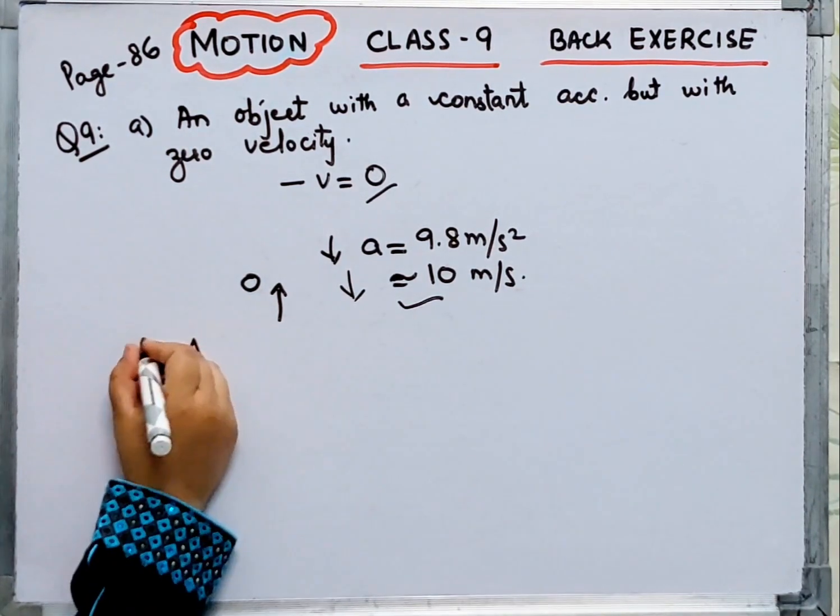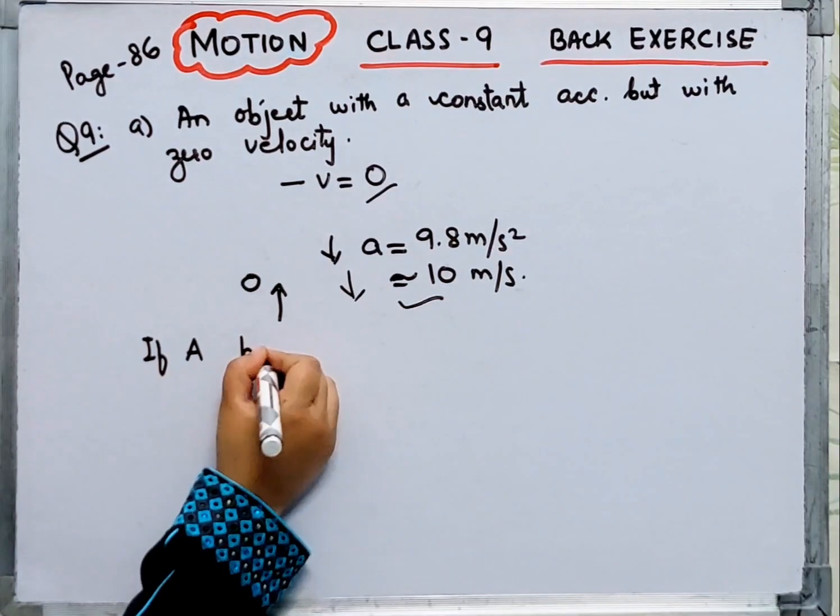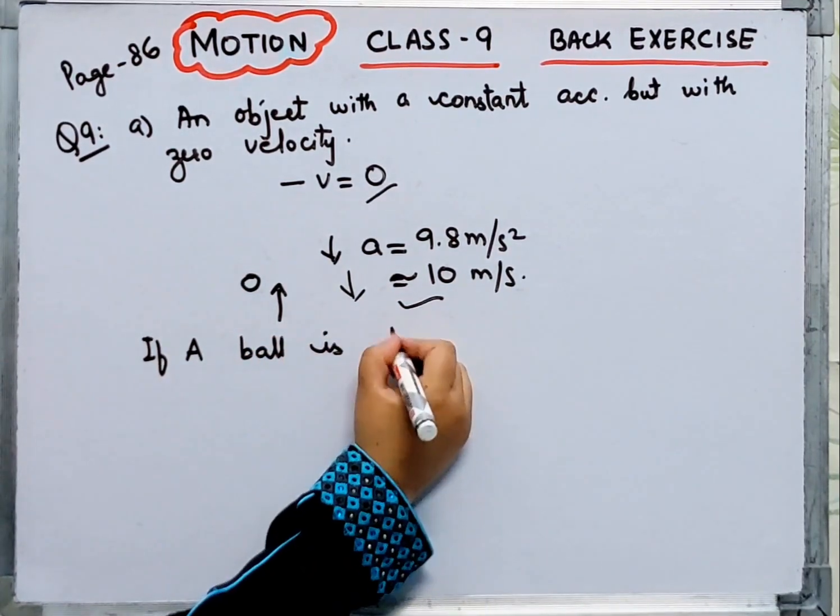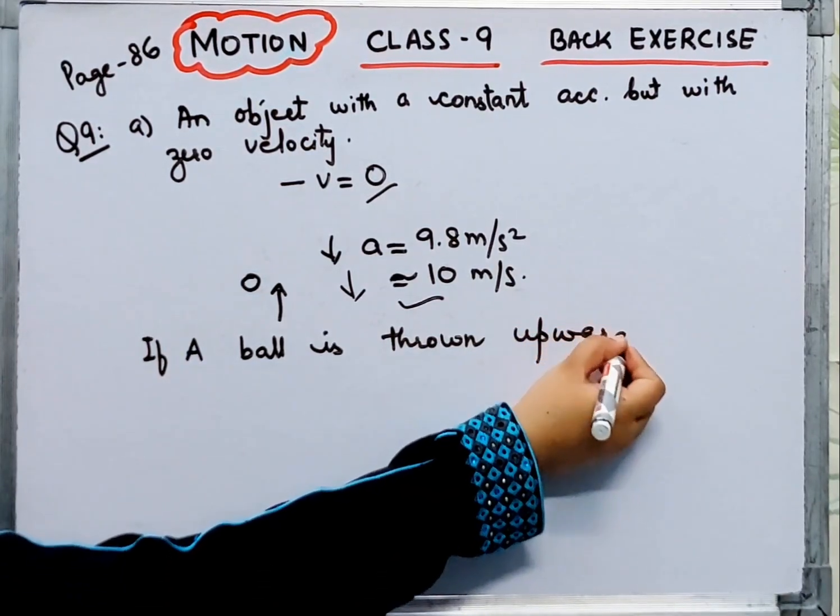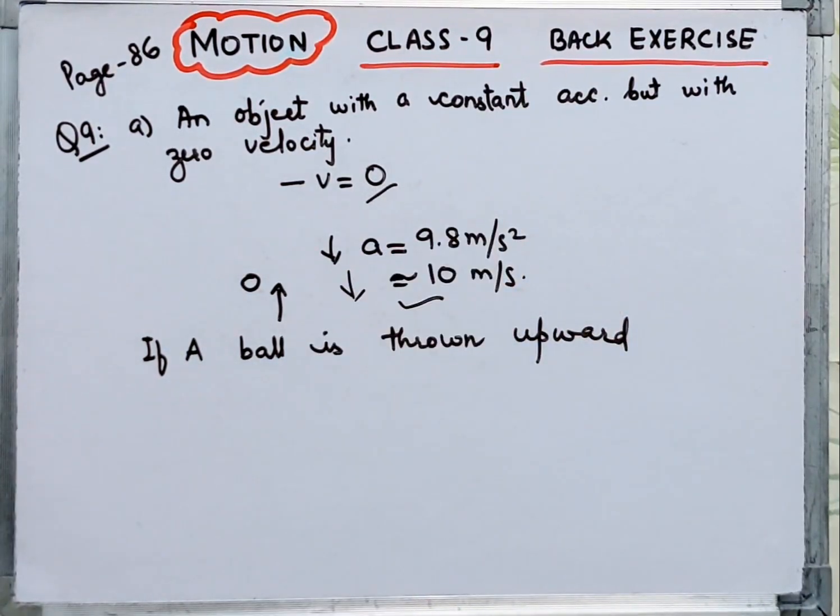If a ball is thrown upwards, what will happen? It will travel with a constant acceleration but with zero velocity. Now go to part b.